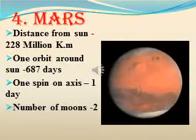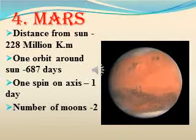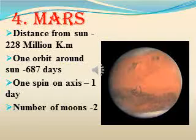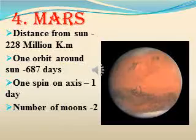The fourth planet from the Sun is Mars. It is also known as the red planet. Its distance from the Sun is 228 million km. One orbit around the Sun takes 687 days. One spin on axis takes one day. It has two moons.